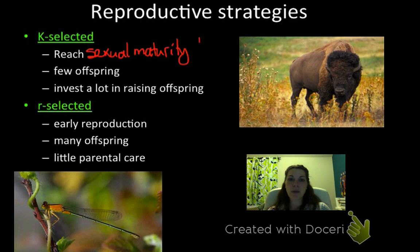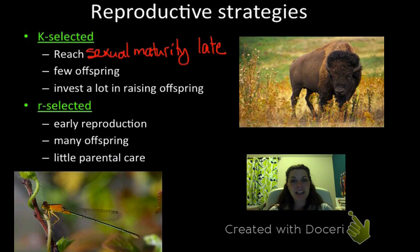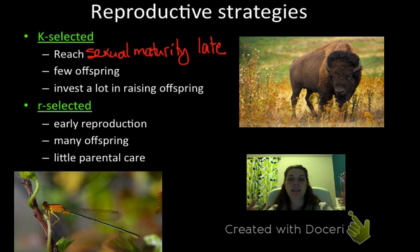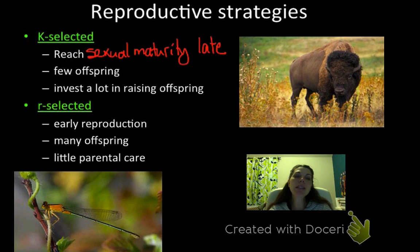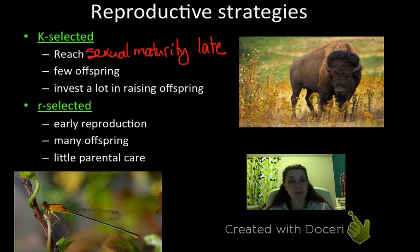Now let's talk about reproductive strategies: r-selected and K-selected. K-selected individuals reach sexual maturity relatively late — for example, humans reach sexual maturity during puberty around middle school, whereas insects can reach it in a matter of days. When K-selected individuals reproduce, they have very few offspring and each requires a significant energy expenditure. Humans typically have one offspring that is not capable of surviving on its own, and gestation alone is 40 weeks.